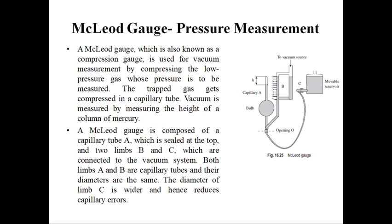The McLeod gauge is similar to the construction shown here. Initially, the movable reservoir is lowered to allow the mercury column to fall to the opening level O, such that the mercury level falls below the opening zone.